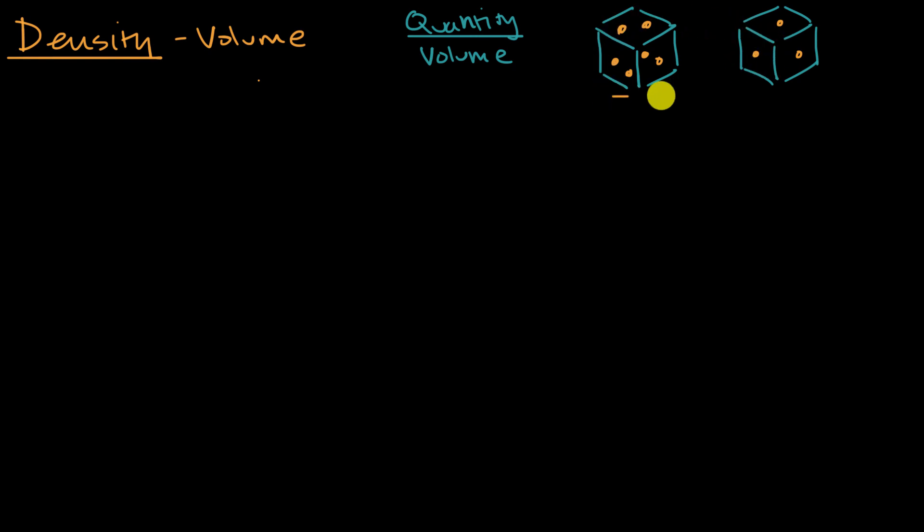And in general, we're going to take the quantity and divide it by the volume. And the units are going to be some quantity per unit volume. Now, you're typically going to see mass per unit volume, but density, especially in the volume context, can refer to any quantity per unit volume.